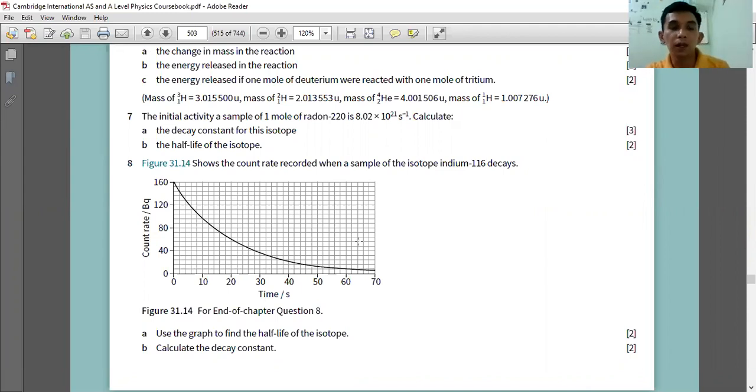So here you need to find the half-life by reading the graph. You see the time and you see also the count rate in arbitrary units. The original count rate is 160, so half of 160 is 80.